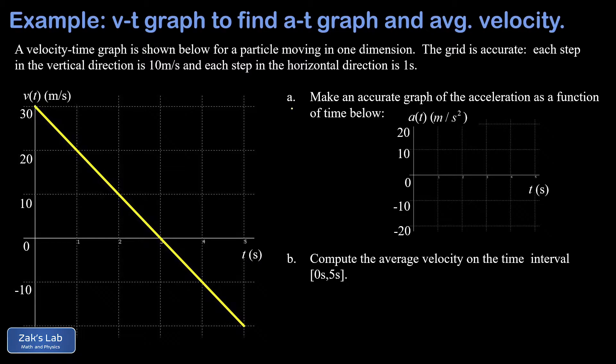In part A, we're asked to construct a plot of the acceleration as a function of time. And then in part B, we're going to get the average velocity for this particle on the time interval 0 seconds to 5 seconds. So we're exploring both the slope and area relationships for this v-t graph.